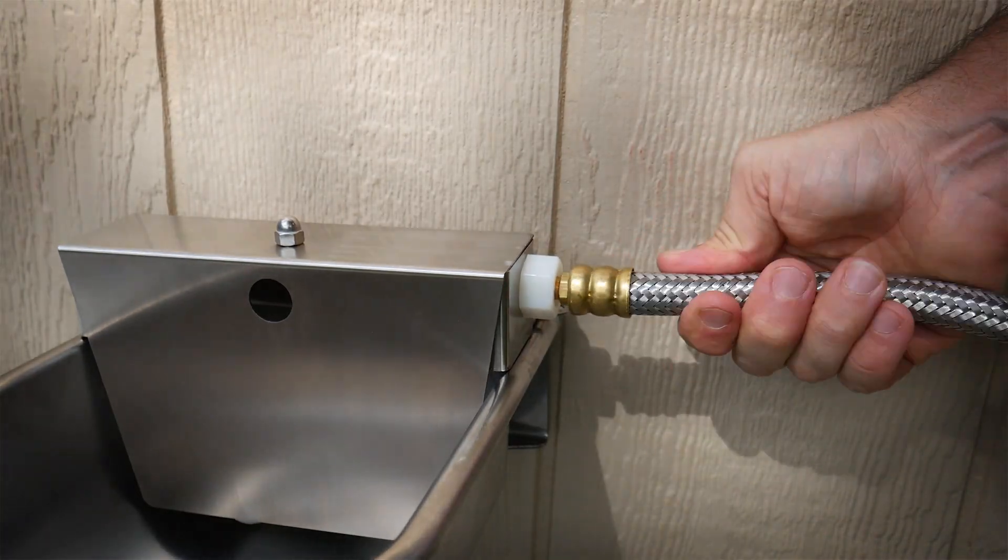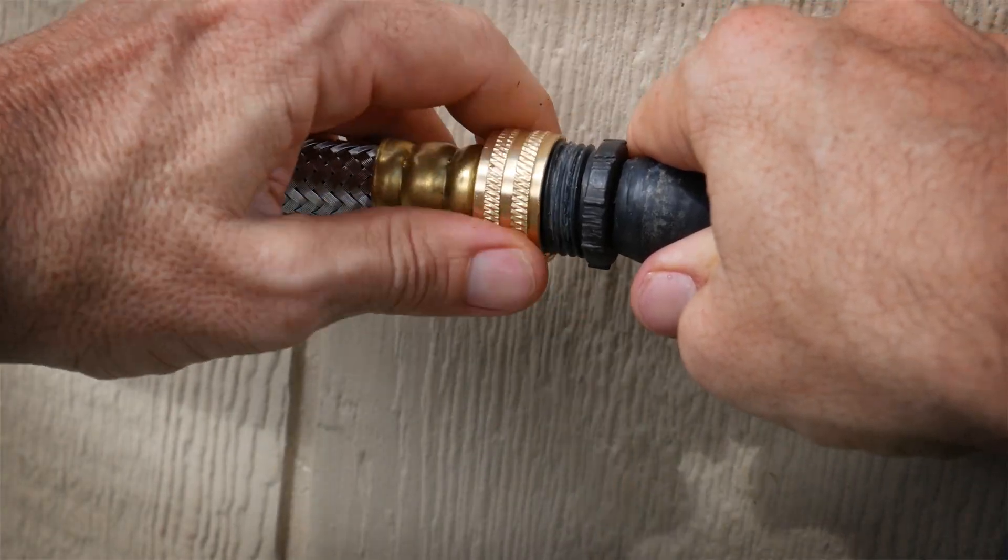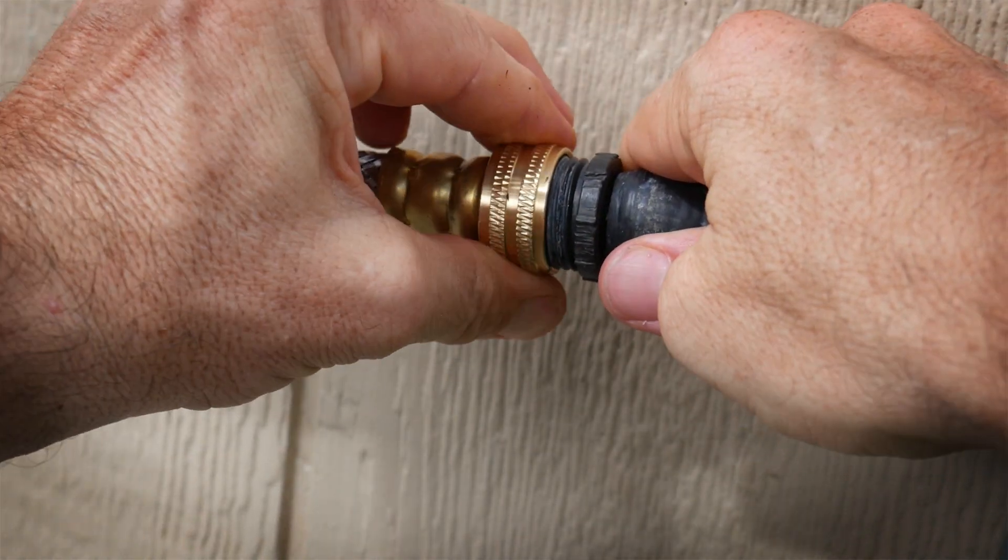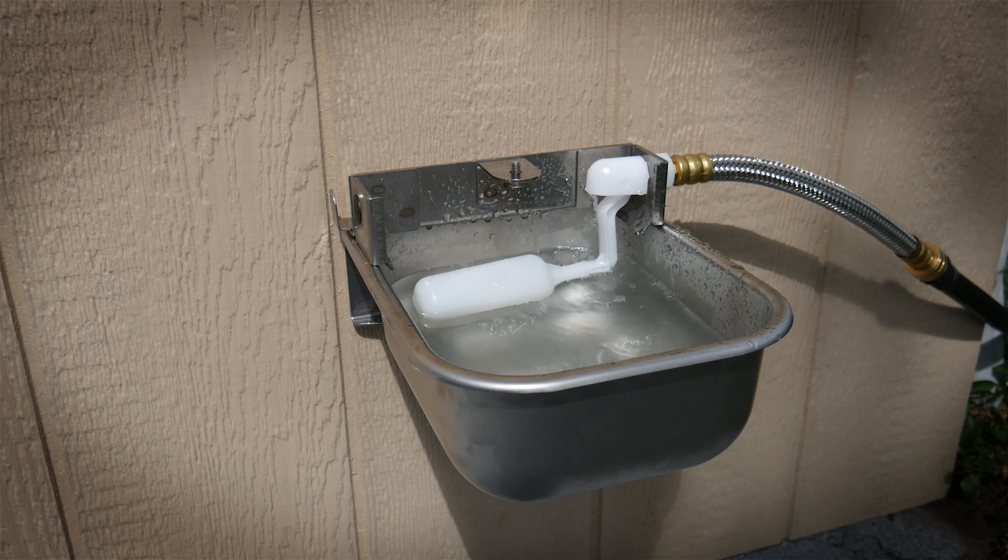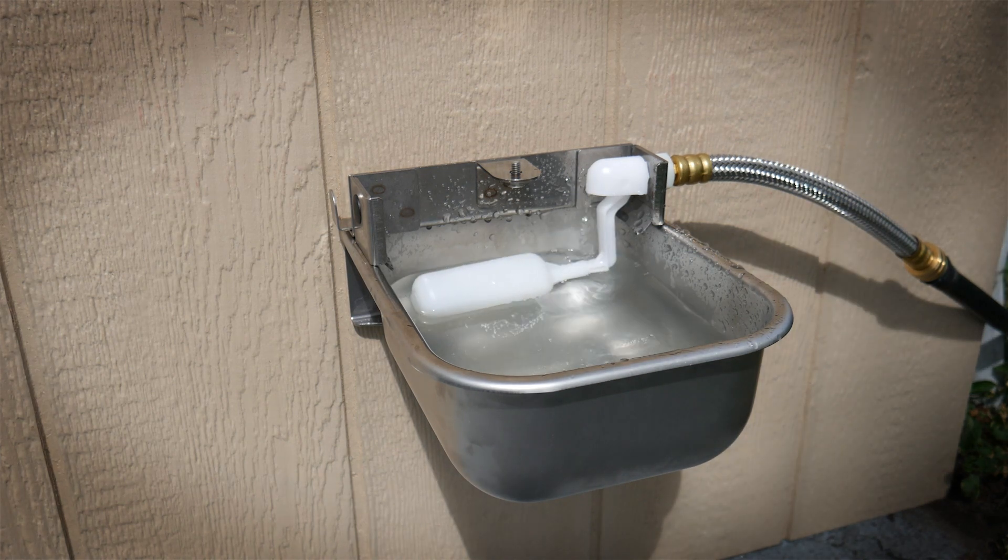Install the garden hose adapter. Connect the garden hose to the water bowl and slowly open the water. The valve will automatically stop the water from coming into the bowl when the level is reached.